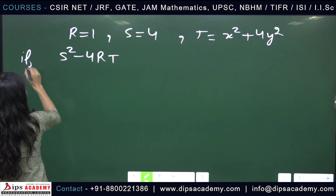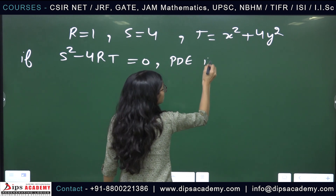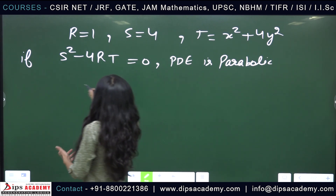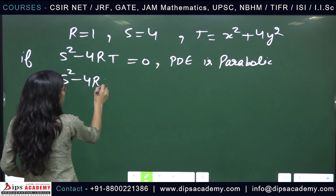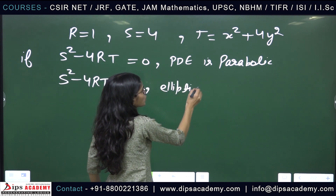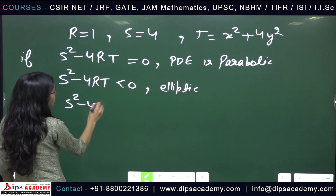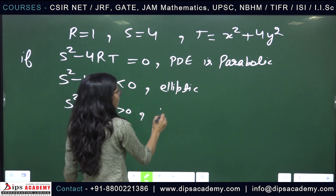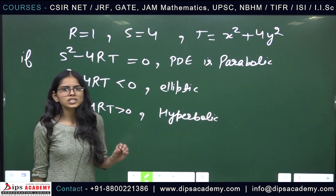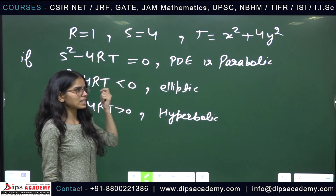The classification rules are: if S² − 4RT = 0, the PDE is parabolic; if S² − 4RT < 0, the PDE is elliptic; and if S² − 4RT > 0, the PDE is hyperbolic. We now compute the discriminant for our equation.